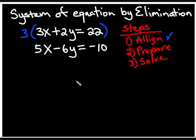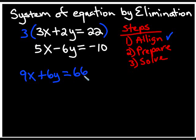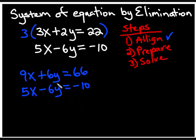Our result here is going to be 9x plus 6y is equal to — three times 22 is 66. On the second equation we didn't change anything; we only change the equations we have to. To prepare, we multiplied the top one by three and distributed it onto all three terms, so we got 9x plus 6y is equal to 66. Notice that the coefficients of y are opposites — that's what we're looking for, and that's how we're going to proceed.